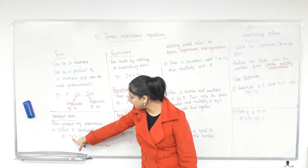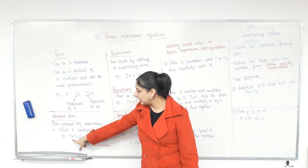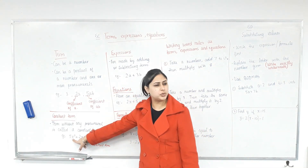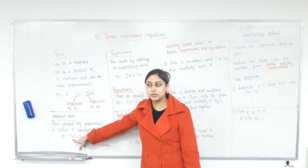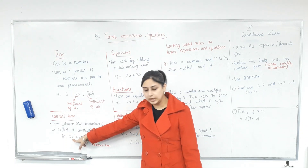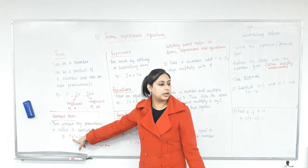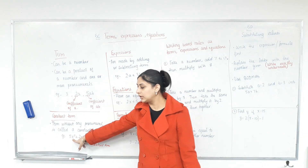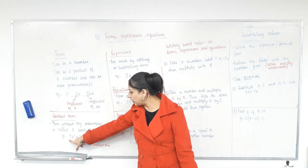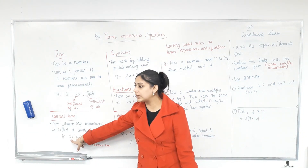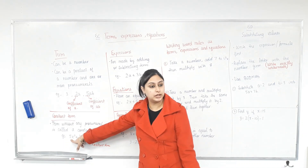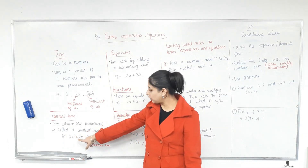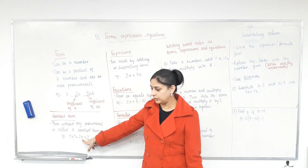So here, 5X squared — is that a term? Can we have X to the power of 2? Yes, we can. That means X is multiplied by X. So what's the coefficient of X squared? 5. What's the coefficient of X? 2.